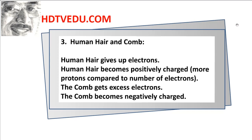Human hair and comb: human hair gives up electrons, so it becomes positively charged. The comb gets excess electrons and becomes negatively charged.